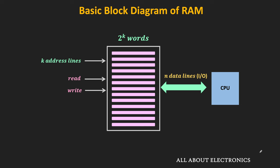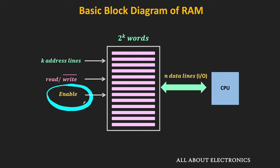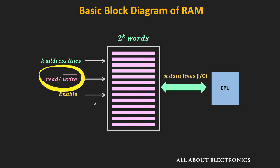In commercially available memories, control signals are applied differently. Instead of having 2 separate control signals for read and write operations, there is one control signal for selecting the memory and one control signal to select the operation.